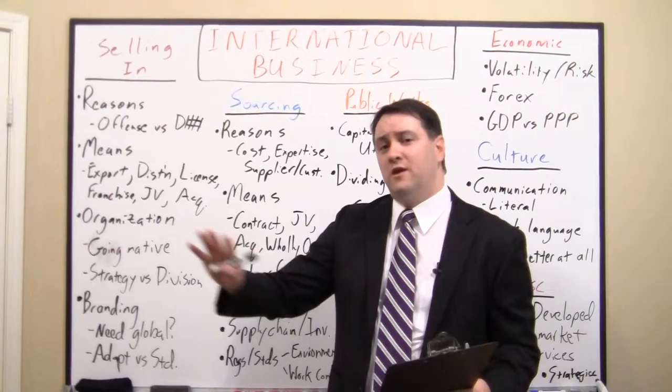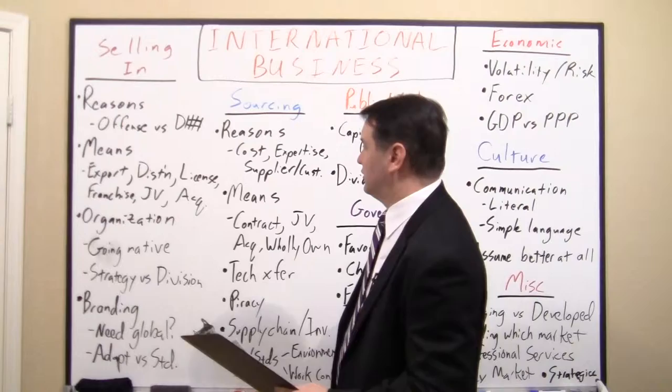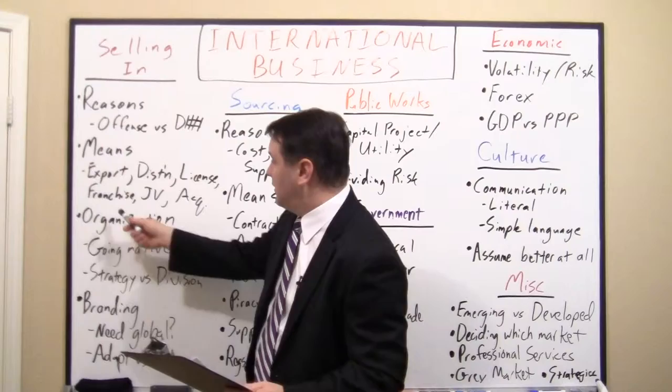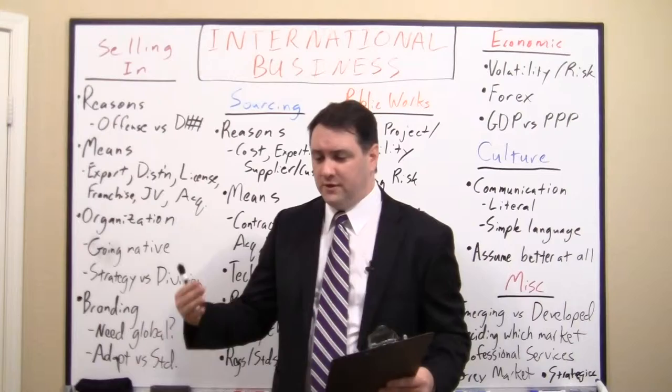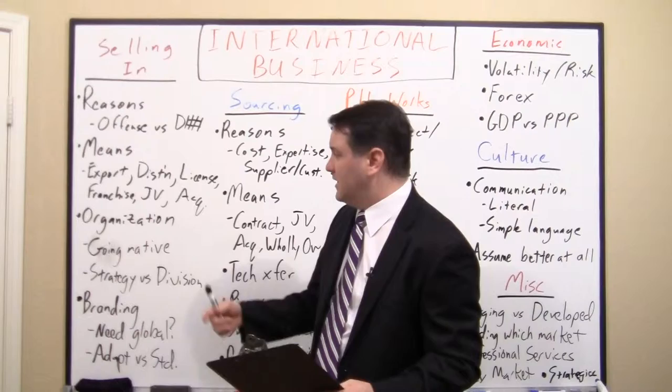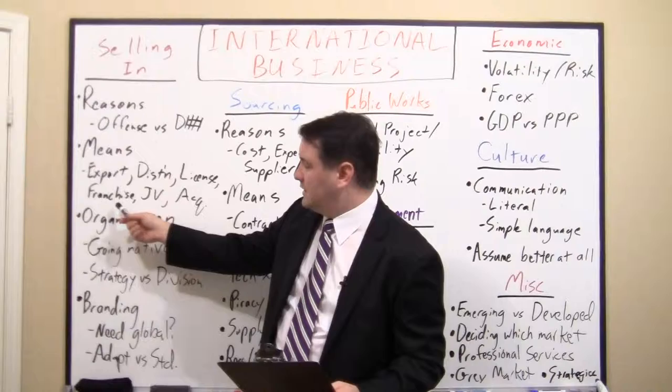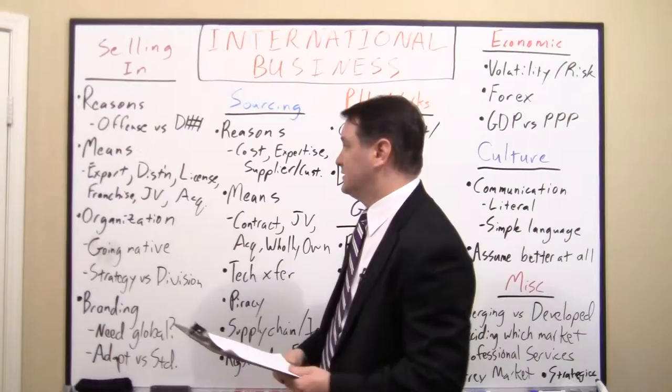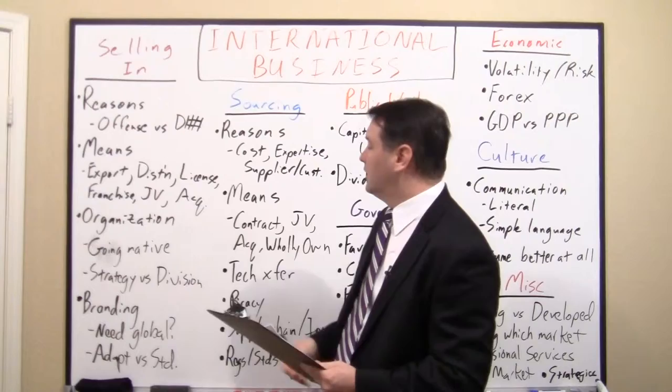You can also license your product — where you're not even offering the product directly, but letting someone else manufacture it using your name or technology. You can also have franchises, more common in the restaurant business, where they're locally owned but use your business model, and you make money by selling them equipment and raw materials. For example, if you've been to China, there's a KFC on just about every corner — it's actually bigger than McDonald's in China. You can also do a joint venture, which is often times government mandated, pooling resources with a local player.